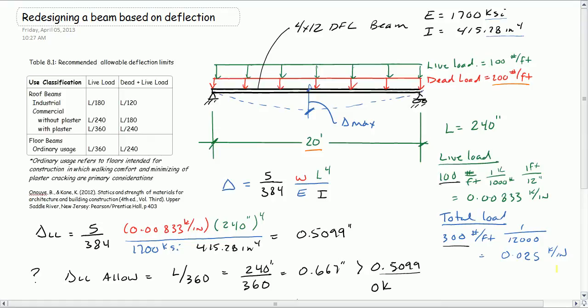In this example, I'm going to pick up where we left off in the last problem. We had this 4 by 12 Doug Fir Larch beam with properties shown here, and it is spanning 20 feet with a dead load and a live load shown of a total of 300 pounds per foot.